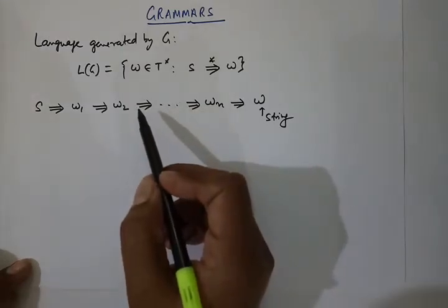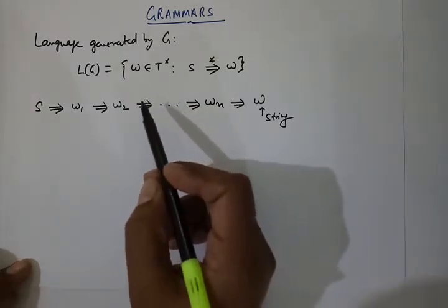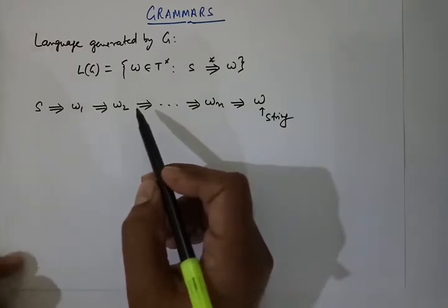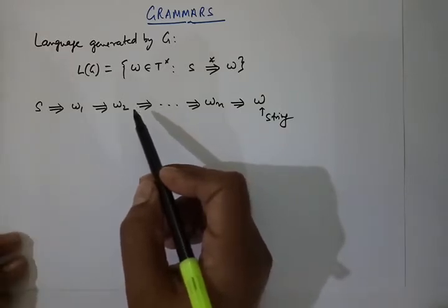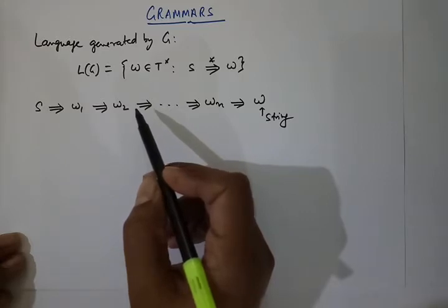In this lecture we are going to discuss more on grammars. In the last lecture we have already seen what a grammar is. A grammar is defined as a quadruple G = (V, T, P, S) where V is variables, T is terminal symbols, P is production rules, and S is the start symbol.